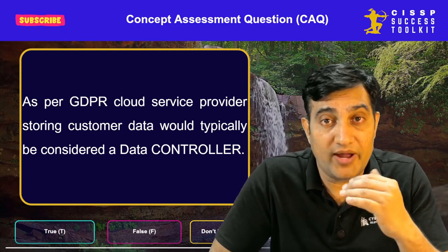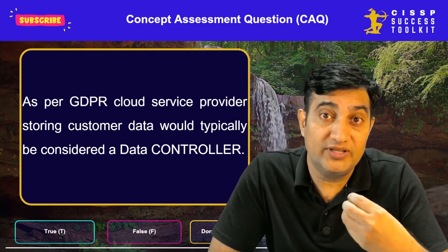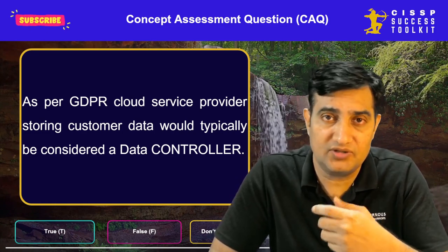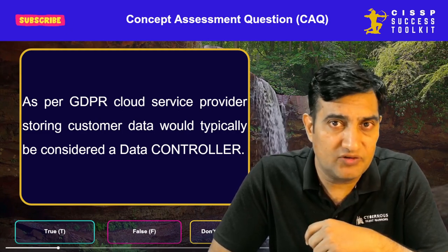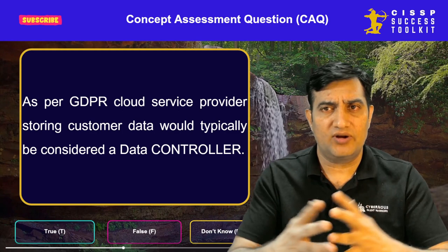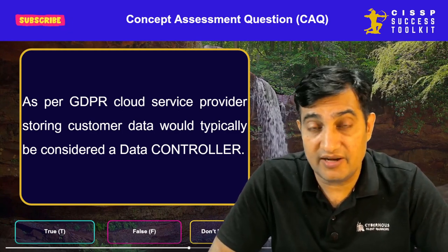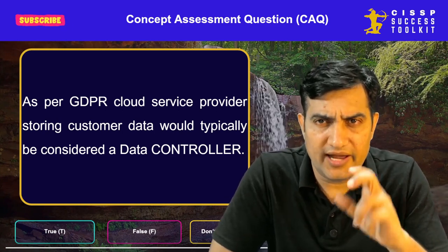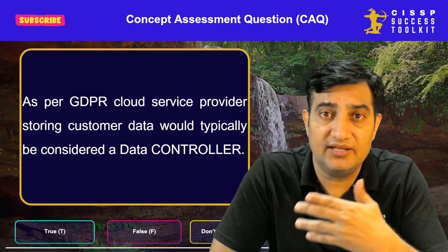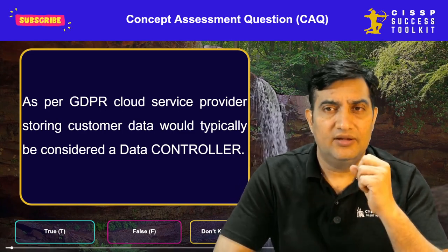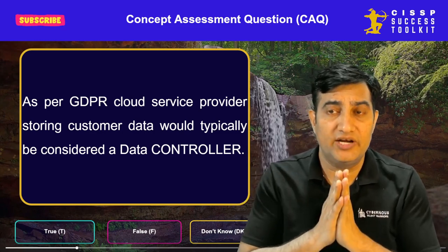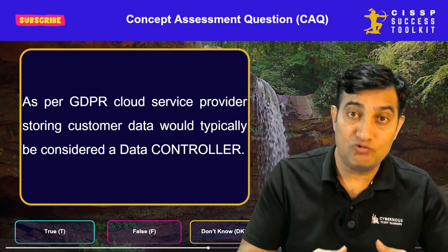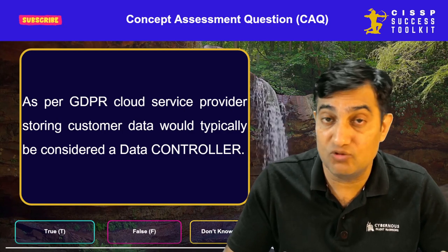The data controller is primarily responsible for complying with GDPR. If there is a breach, the data controller will be the first entity questioned. They are also responsible for collecting and managing consent from the data subject whenever data is being collected. They are responsible for ensuring transparency in their entire privacy policy, and they must maintain data records for processing activities, because in the event of legal implications, they have to demonstrate compliance.